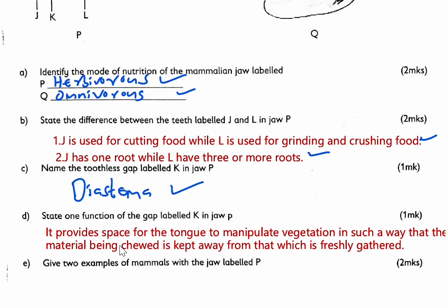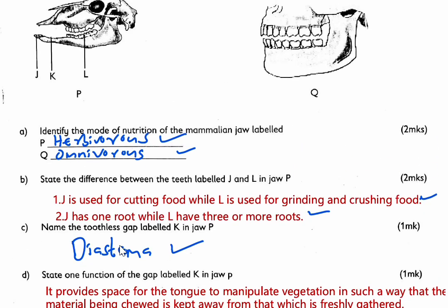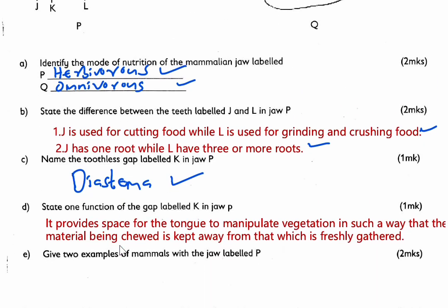Part E asks: give two examples of mammals with the jaw labeled P. Jaw P is for herbivorous animals. One very common example is a cow. Tell us in the comment section which other mammal you know. Thank you so much for your responses — I really appreciate it.